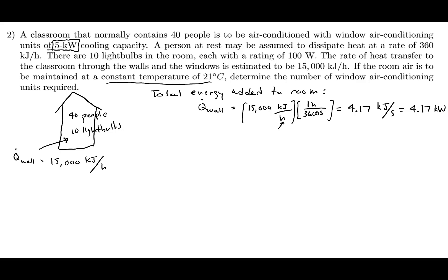Another one is we have people and lights. So let's figure out how much energy is added to the room from the people. Q people is equal to... each person is assumed to dissipate a heat rate of 360 kilojoules per hour.